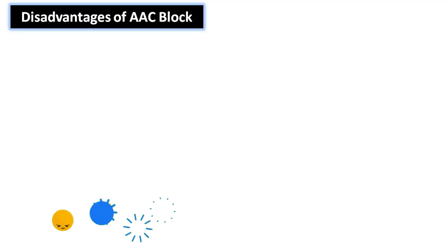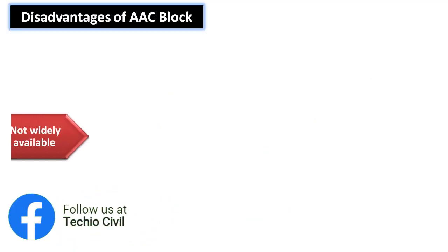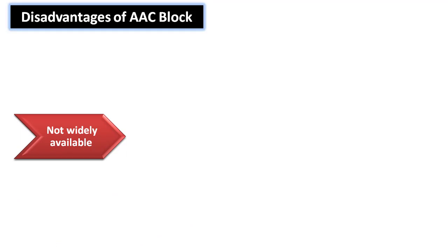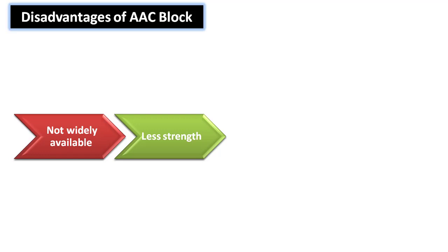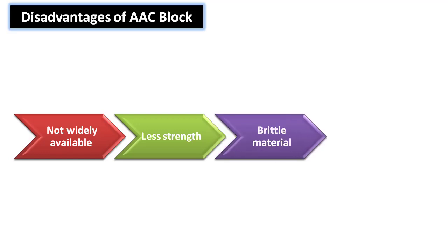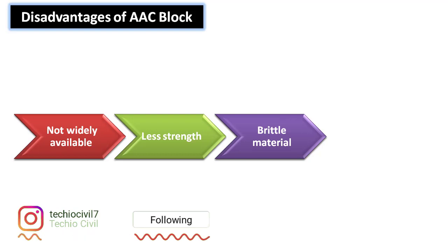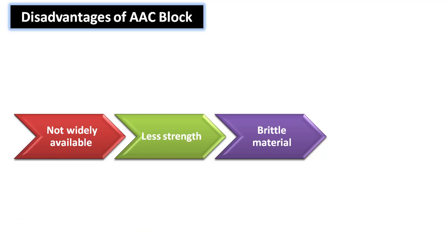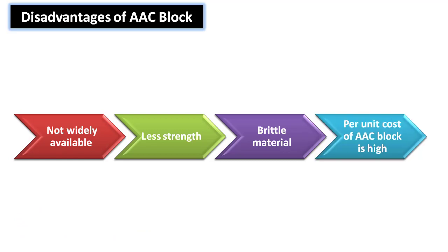The disadvantages of AAC blocks are: first, they are not widely available in all areas; second, their strength is very low compared to brick blocks or concrete blocks; third, AAC blocks are brittle materials which can cause cracks in a building — this is a major disadvantage; and finally, the per unit cost of AAC blocks is high compared to other materials.